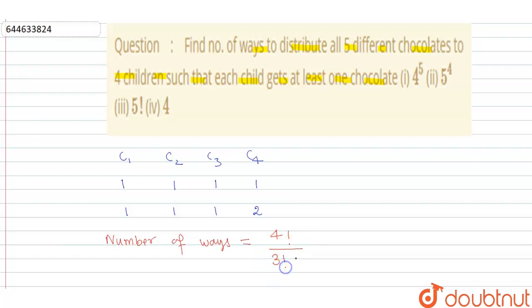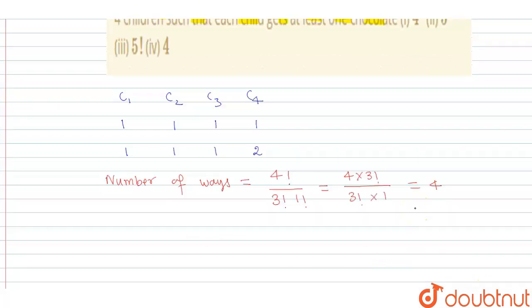Here we can write that 4 factorial upon 3 factorial into 1 factorial. Or we can solve this one. Here 4 factorial can be written as 4 multiply 3 factorial upon 3 factorial multiply 1 factorial, which equals 1. 3 factorial cancels out and we get here 4.